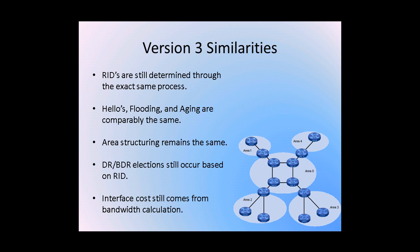I would like to now cover the similarities that Version 3 has with Version 2. In OSPF Version 3, router IDs are still determined through the exact same process, meaning they still use IPv4 interfaces. The highest loopback up-up is preferred first, then the highest general up-up IPv4 interface is preferred. Hellos, flooding, and aging are comparably the same, including their timers and the way their timers are defined. Area structuring remains the same — there is still a backbone area defined as area 0, and all other areas must have an interface in area 0. Designated router and backup designated router elections still occur based on router ID. Interface cost still comes from a bandwidth calculation.